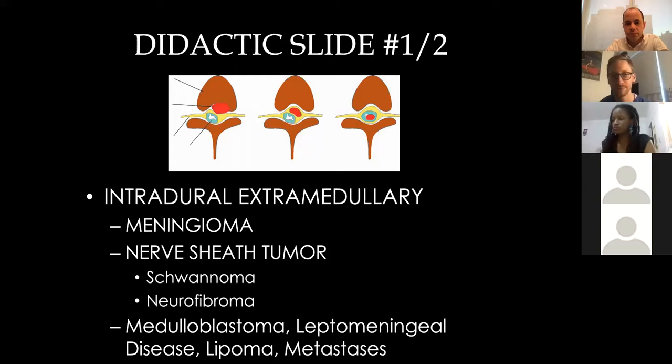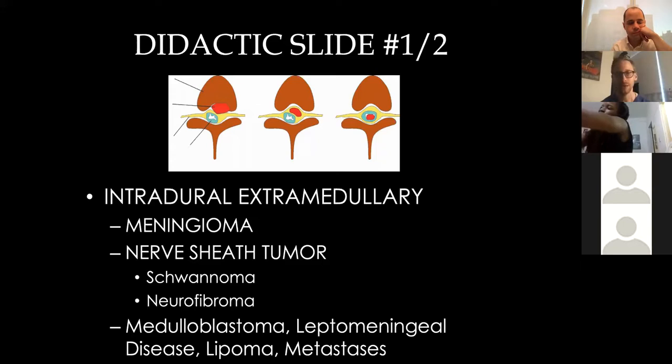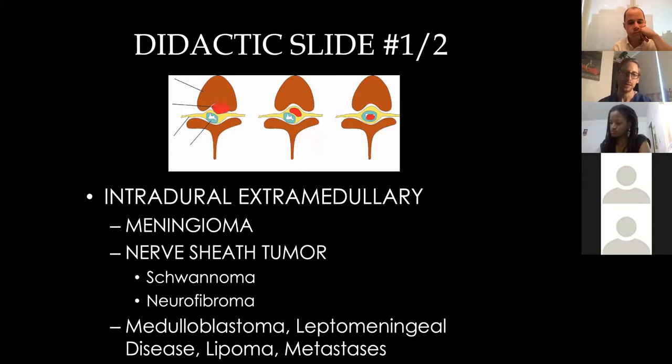The first one I'll talk about is intradural extramedullary — that's the middle picture. Just to keep it basic: inside the dura, outside of the spinal cord. When you see that type of mass, you're thinking meningioma, nerve sheath tumor like a schwannoma or neurofibroma, and then more rare etiologies like medulloblastoma, leptomeningeal disease, lipoma, and metastasis — things we see, but they're very, very rare on a practical level.